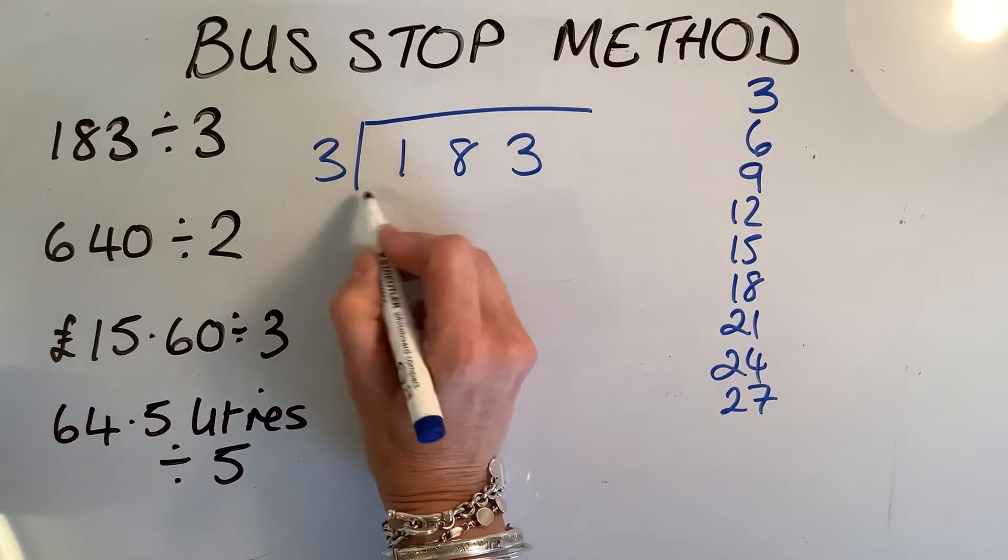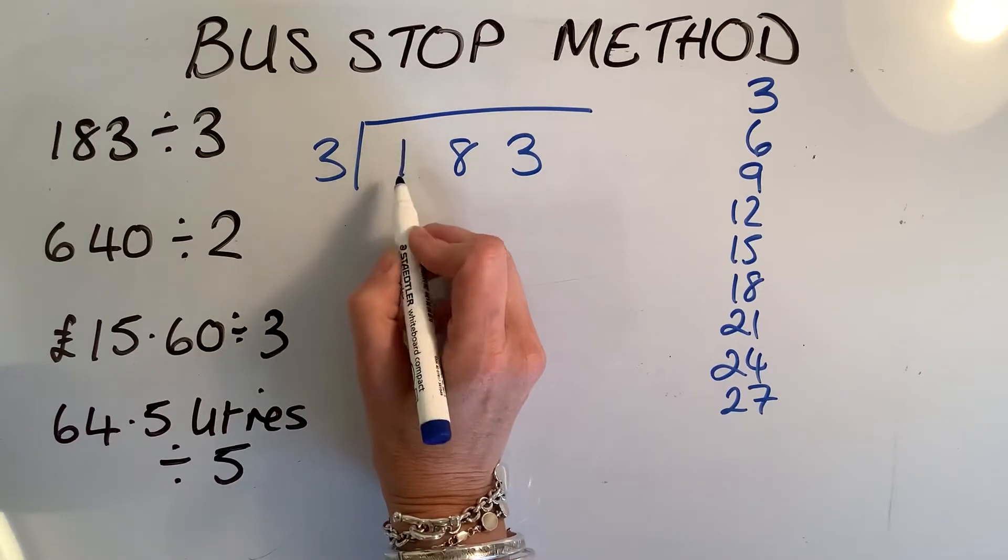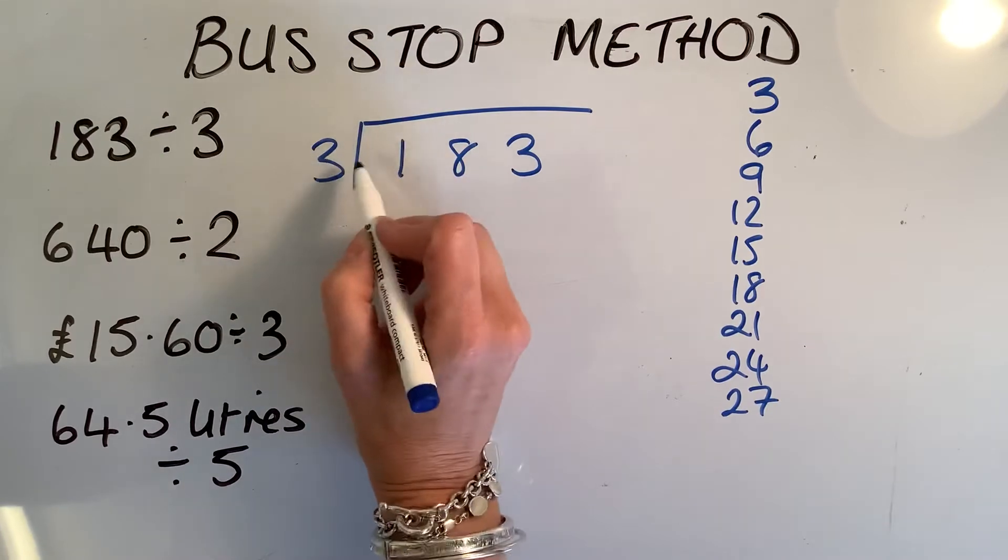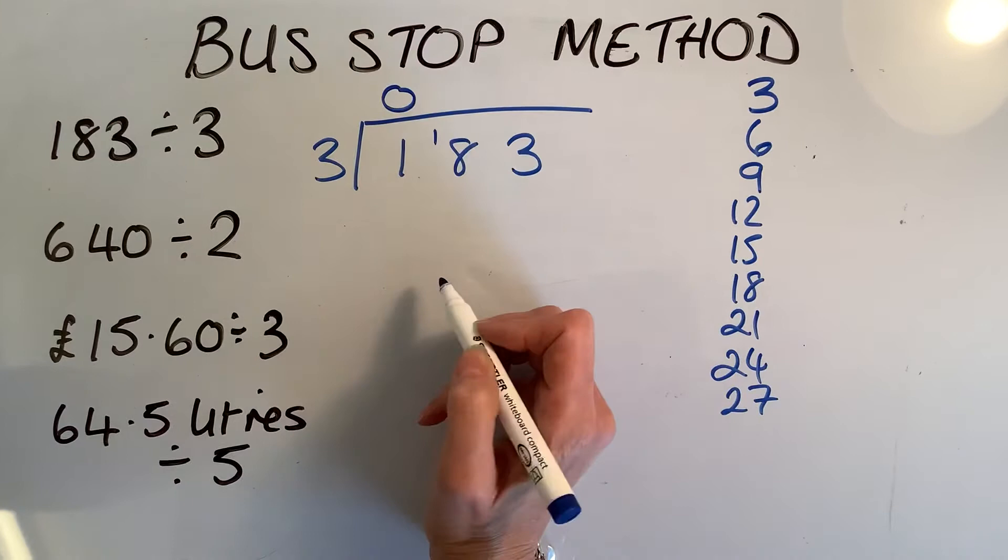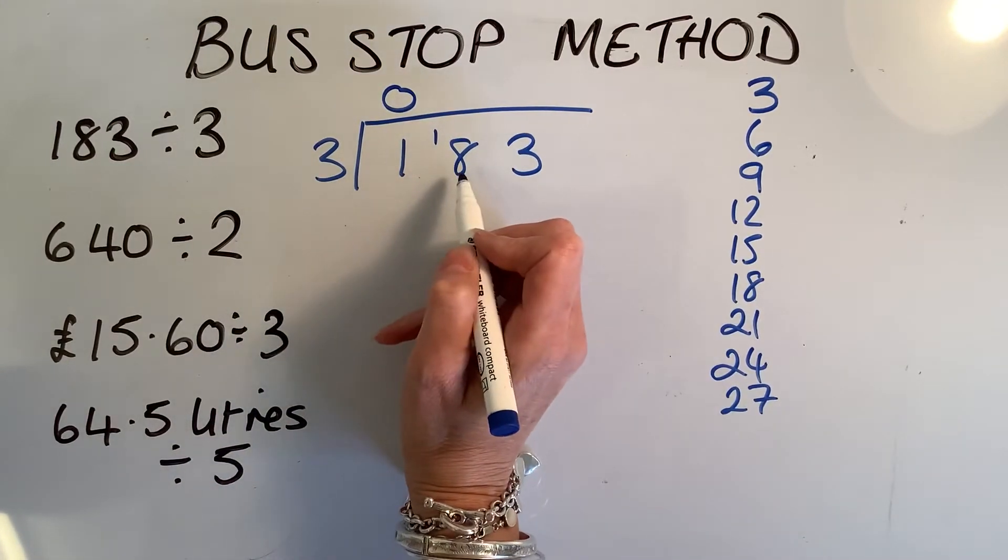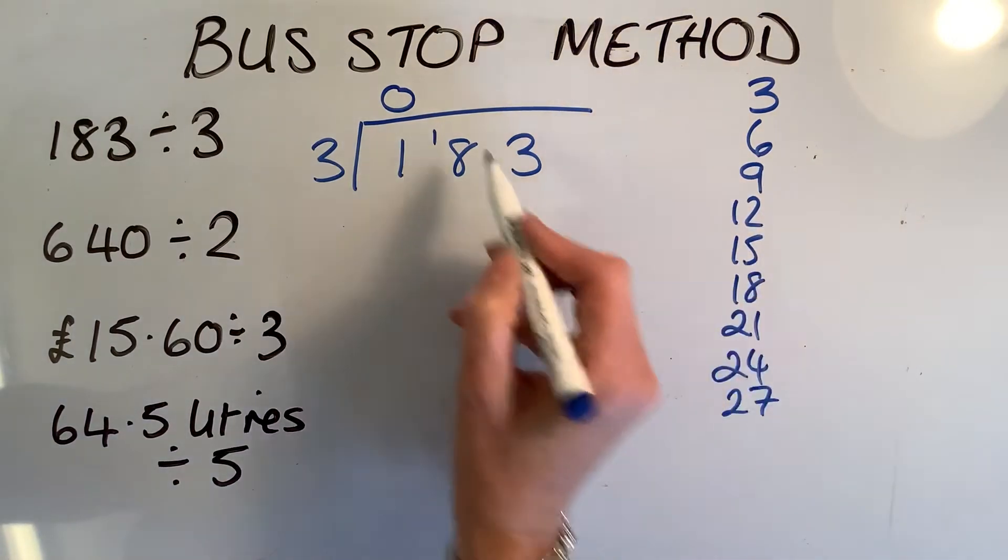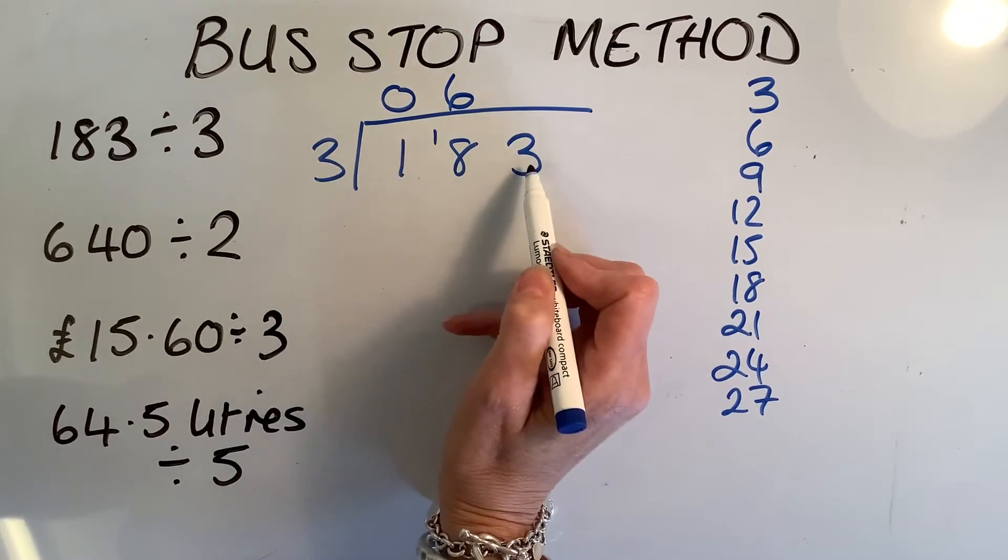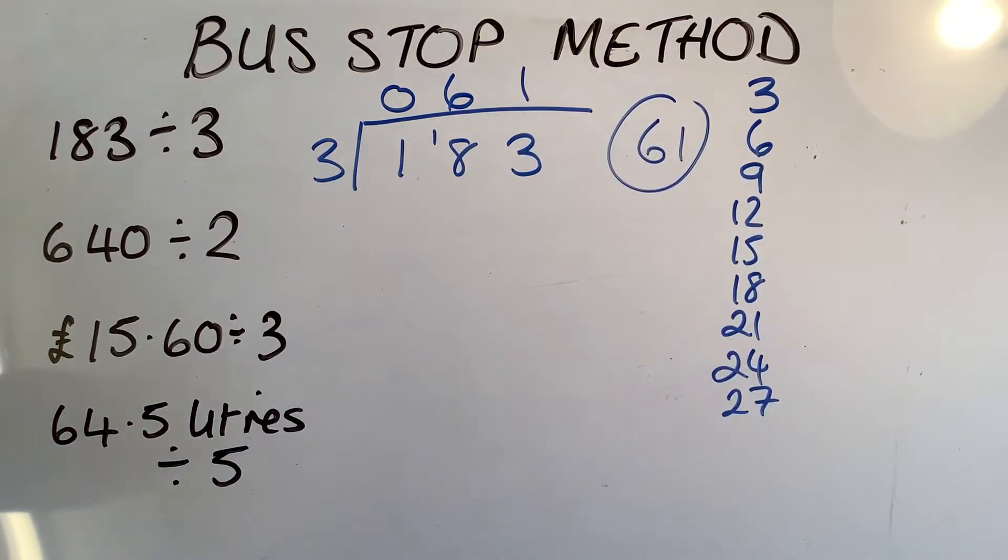1 divided by 3. A lot of people make a mistake there and put 3. Well, you can't - you've only got 1, so you can't get 3 out of it. If you've got a number less than the divisor, it's a 0 and we carry the 1 over. Next, how many 3s are in 18? 1, 2, 3, 4, 5, 6. Six 3s are 18. No remainders, nothing to carry over. How many 3s are in 3? 1. Brilliant, so I've got an answer of 61 for that one. I'll write it at the end and put a circle around it.